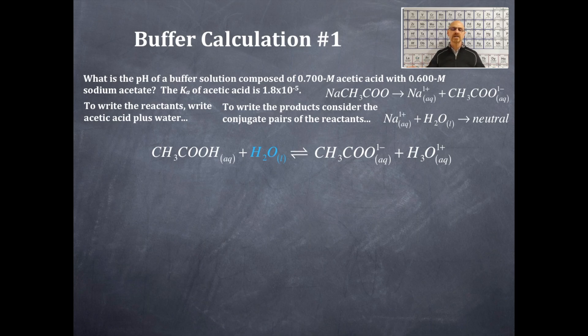Notice another thing about all these equations here is that they are balanced for both charge and mass. On the reactant side, I have a net charge of zero. On the product side I have a net charge of zero. And the same number of carbons, hydrogens, and oxygens are on both sides. Please check that out.